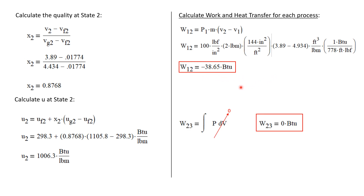Now for the work of process two to three. Work can always be described as the integral of P dV, but this is a constant volume process, so dV equals zero. Therefore the work done by process two to three is zero.